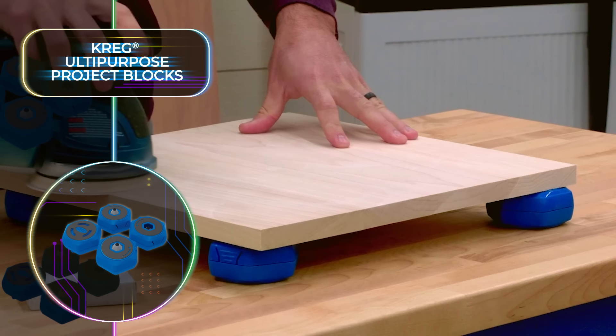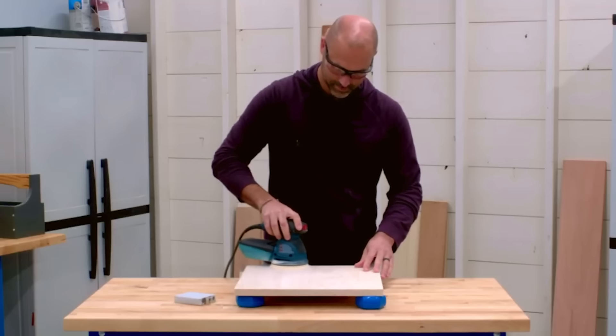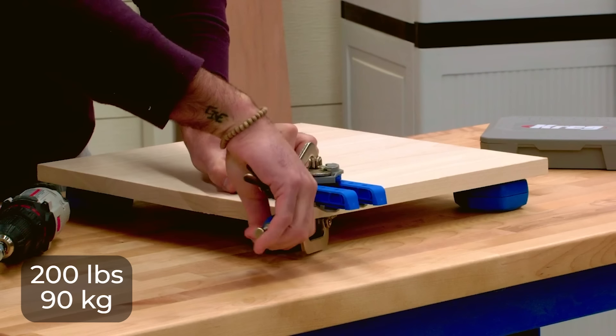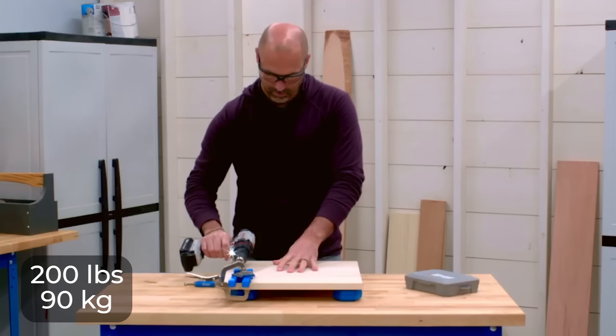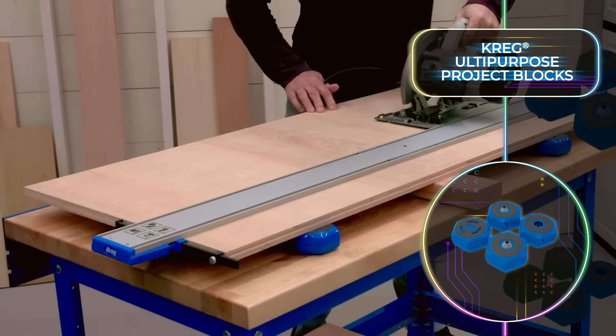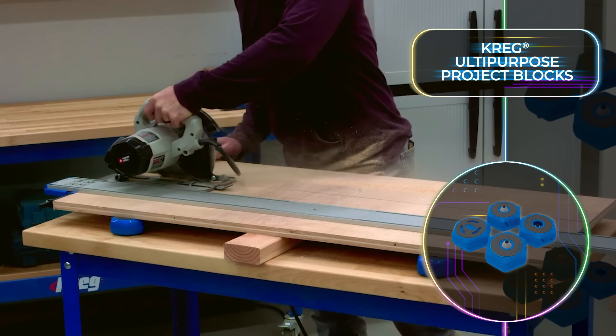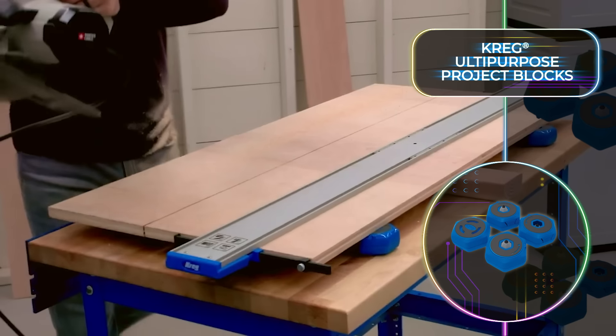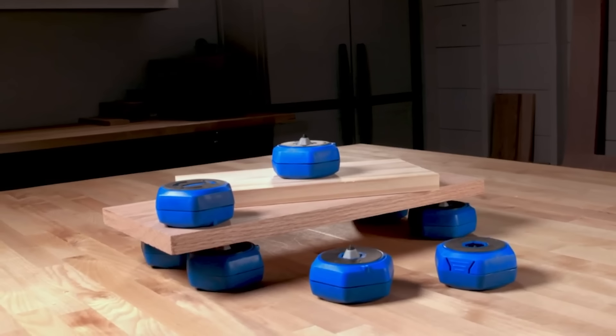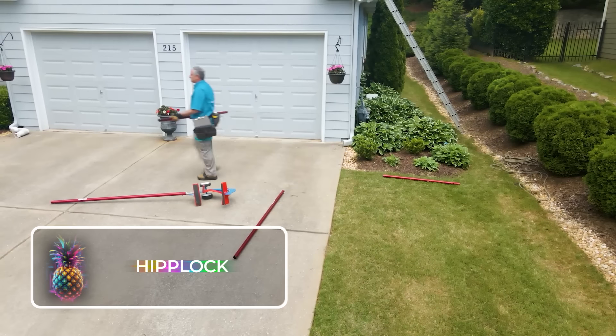These blocks simplify tasks such as painting, drilling, grinding, and other activities that include the lifting of heavy work pieces. Each set comprises four blocks with a combined lifting capacity of 200 pounds or 90 kilograms, and they elevate work pieces by 1.5 inches or 3.8 centimeters. For painting tasks, retractable cone-shaped inserts are included for easy placement.